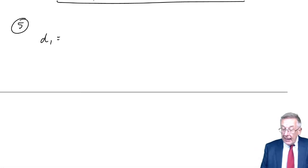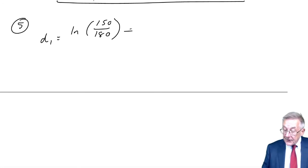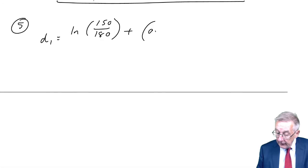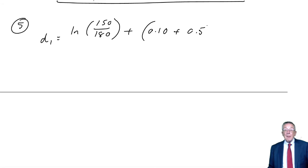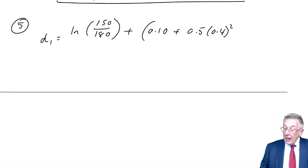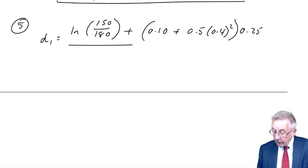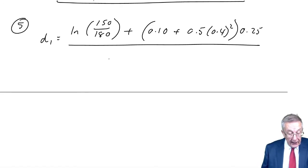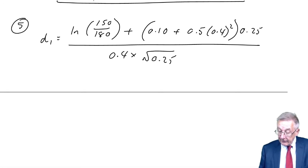What's D1? It's log to the base e of the current share price $1.50 over the exercise price $1.80, plus r the rate of interest 0.1, plus 0.5 times the volatility, the standard deviation which is 0.4, times the time to expiry 0.25, divided by the standard deviation 0.4 times the square root of the time to expiry 0.25.